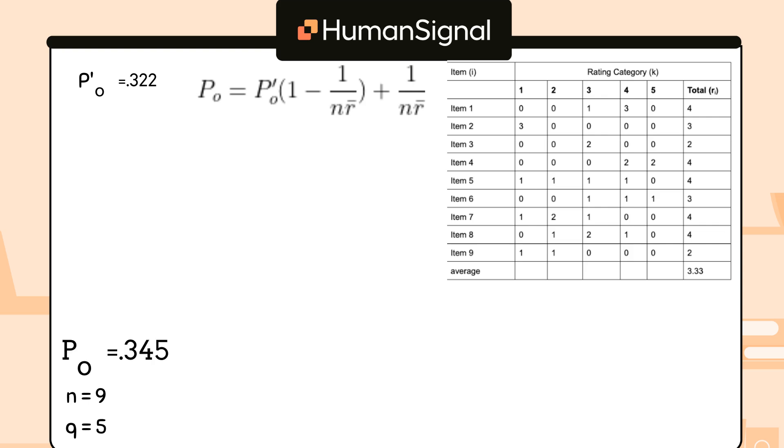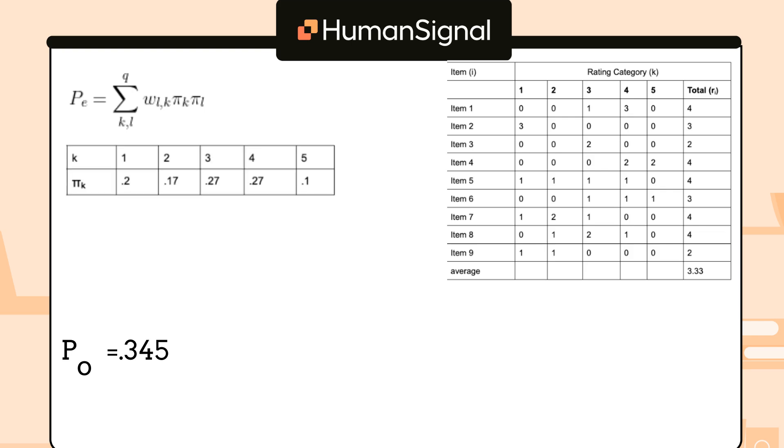Now, we're ready to calculate our expected agreement, PE. We'll use the function on the screen. Basically, we'll sum over every category the weight of the category times pi sub k, the probability of the classification k, and pi sub l, the probability of a classification l. The classification agreement for each category is just the number of times the category was picked across all items divided by the total number of ratings in the data set, in this case, 30. We can add up the values in the columns of the chart and divide to get the following numbers.